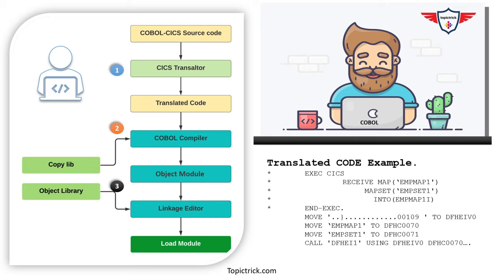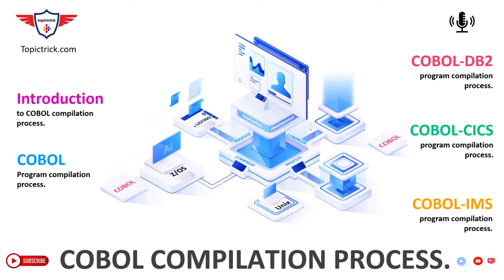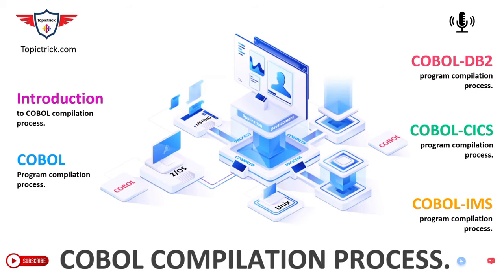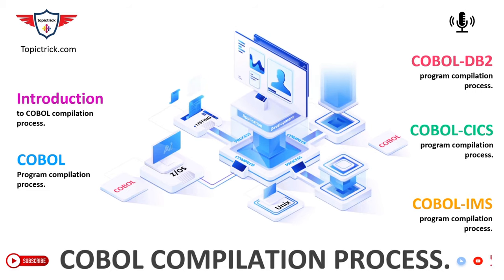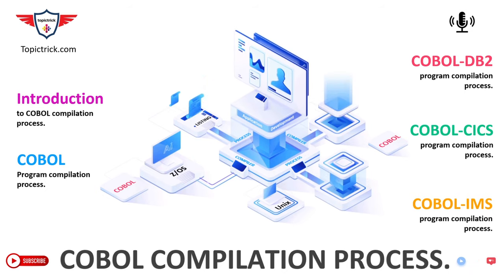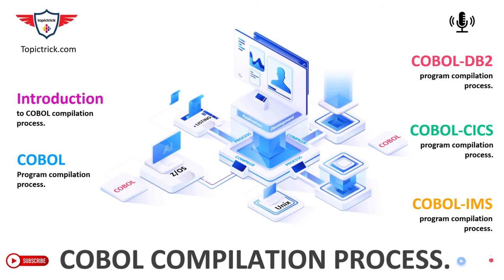So far you have learned three important compilation processes: standalone COBOL, COBOL DB2, and COBOL CICS compilation. Now, before we move to COBOL IMS compilation process, here is a quick question: what would be the sequence of steps to compile a COBOL CICS program that also accesses a DB2 database? Please mention your answers in the comment section.